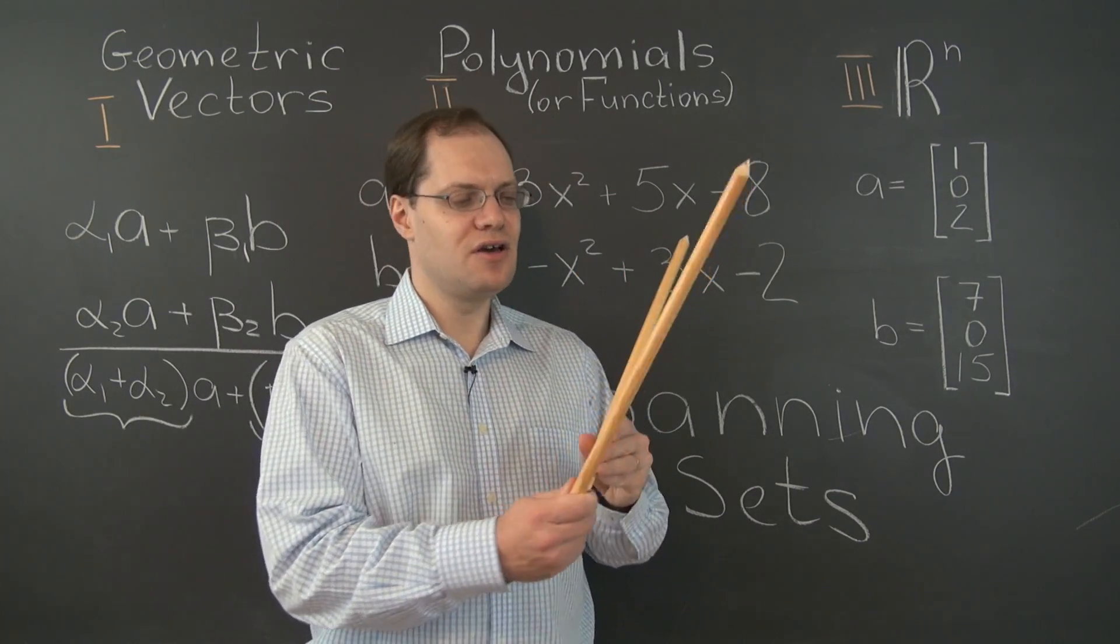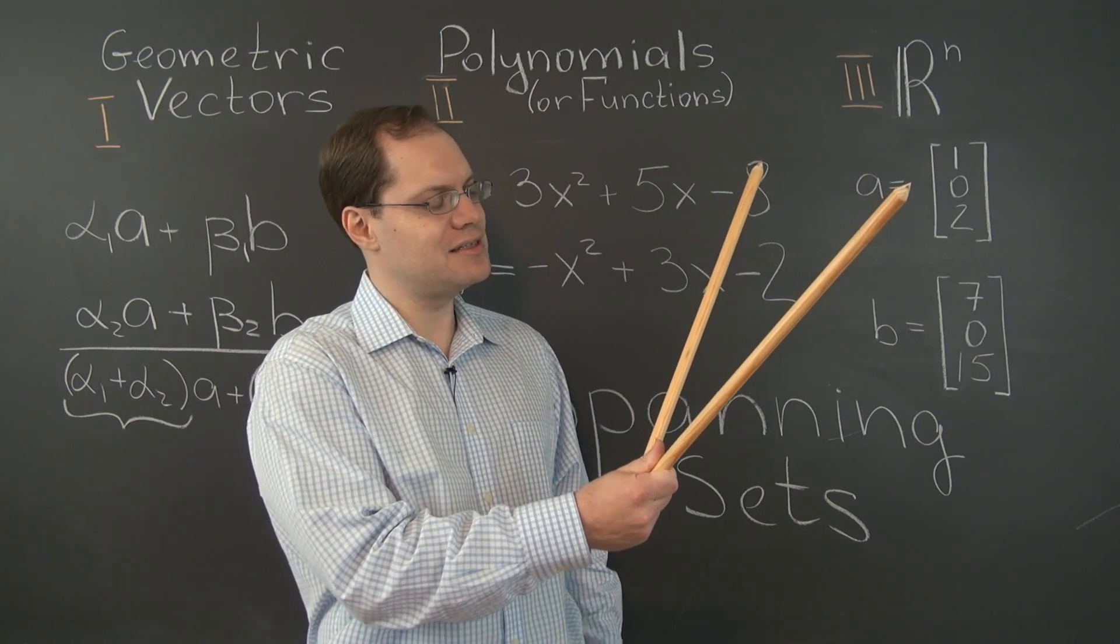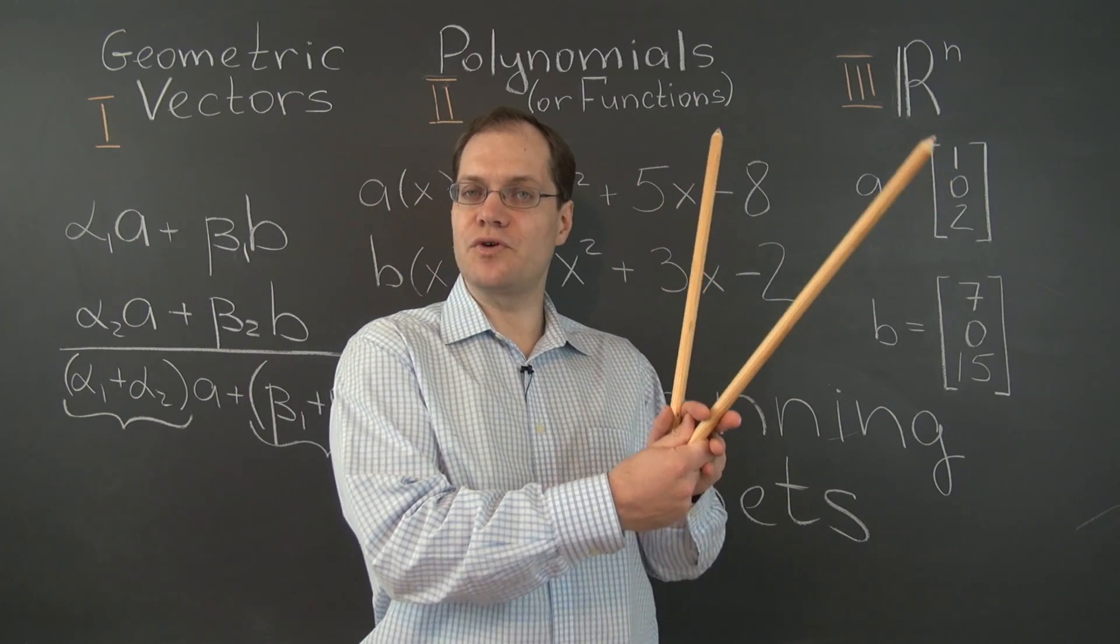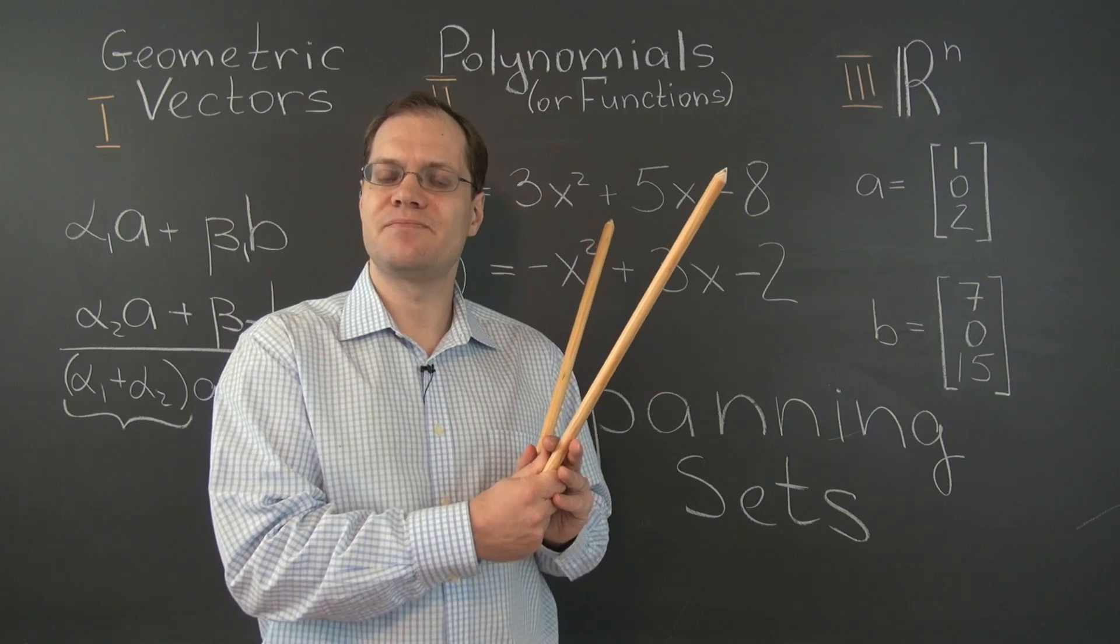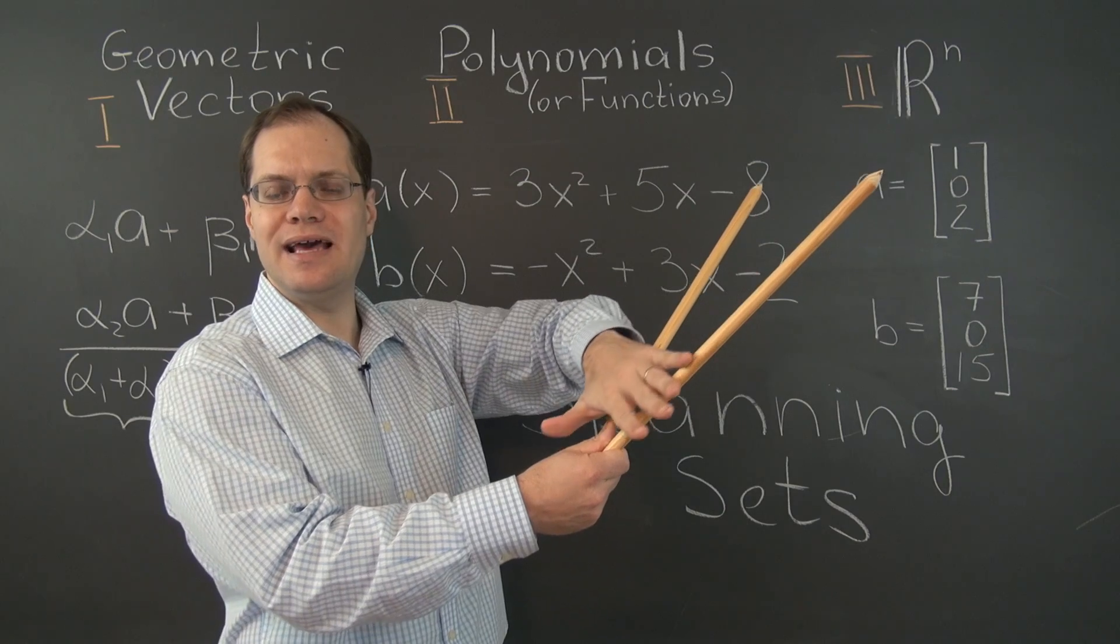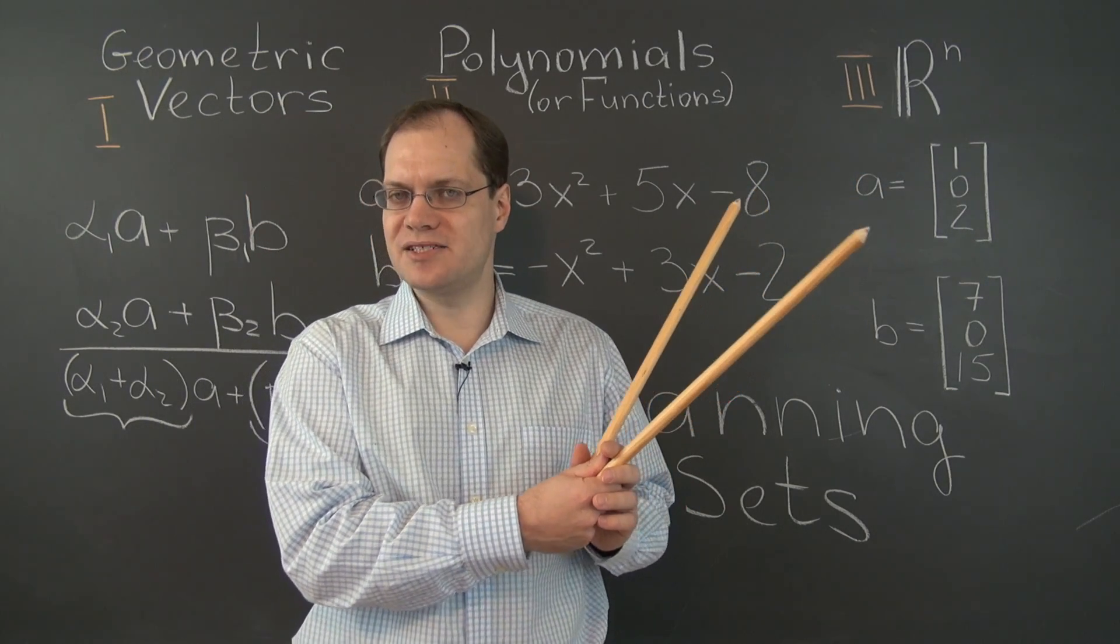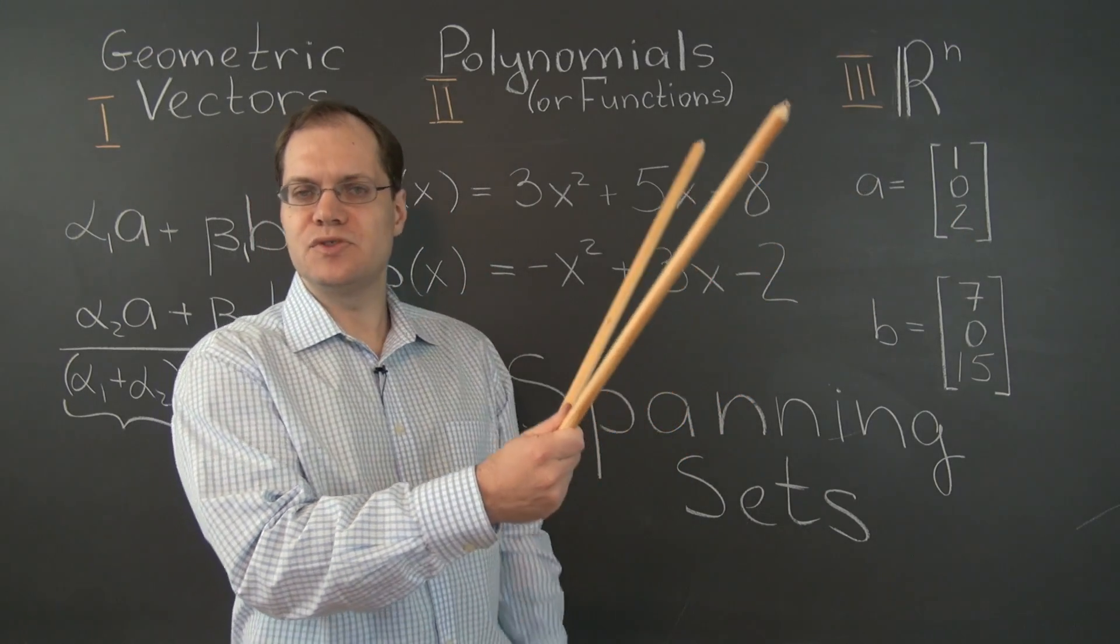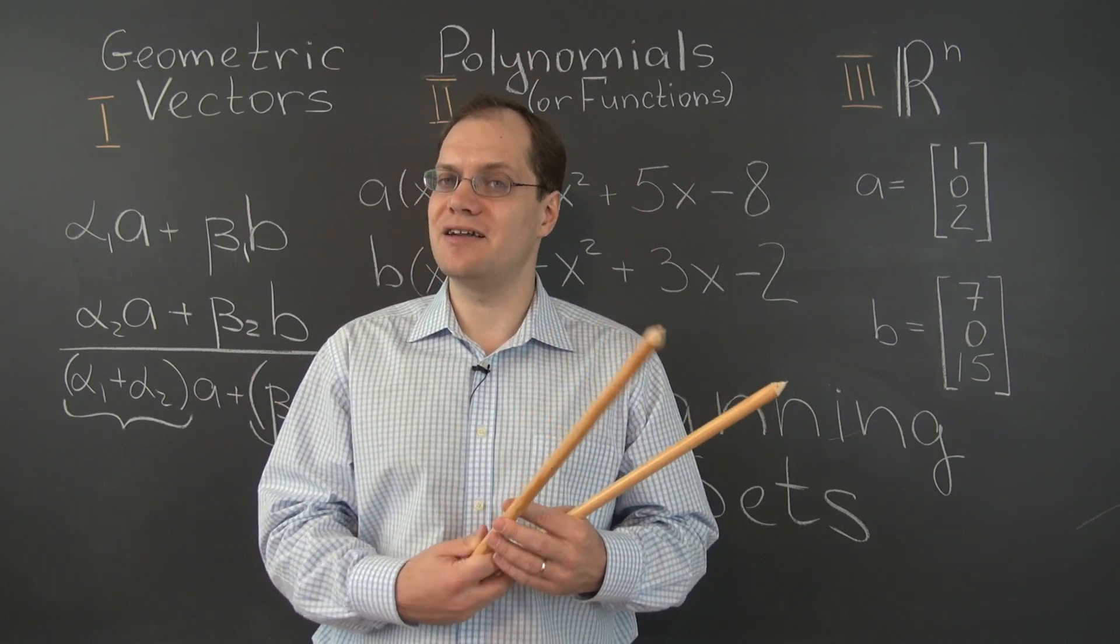Let's start with geometric vectors. Here we have two geometric vectors arranged like this. And our question is, is this a spanning set for the space, for the three-dimensional space? And the answer is, of course not. Because the span of these two vectors is the plane they lie in. You're not able to get the entire space, only the vectors in this plane. So this is not a spanning set for the three-dimensional space.